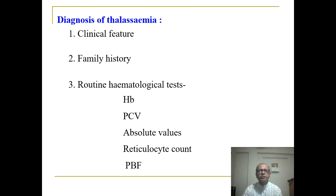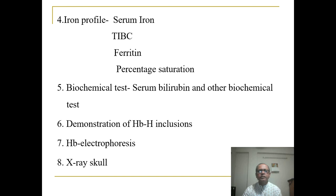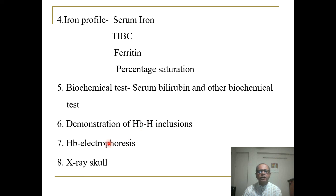Diagnosis of thalassemia is very important. First, we take a clinical history and family history, as this is a genetic disease. Routine hematological tests include hemoglobin, PCV, absolute values, reticulocyte count, and peripheral blood film. The iron profile — serum iron, total iron binding capacity, ferritin, and percentage saturation — is usually normal in thalassemia, unlike iron deficiency where serum iron, ferritin, and saturation are reduced and TIBC is increased. Biochemical tests include serum bilirubin and demonstrating hemoglobin inclusion bodies. Hemoglobin electrophoresis and skull X-ray are also performed.